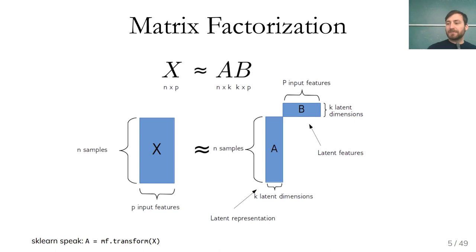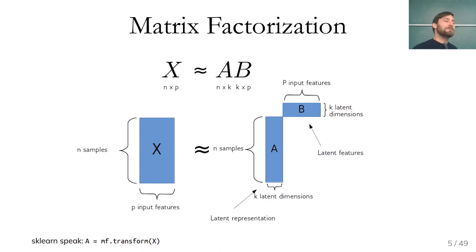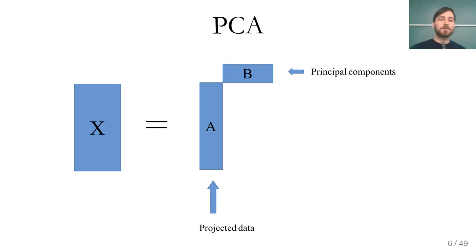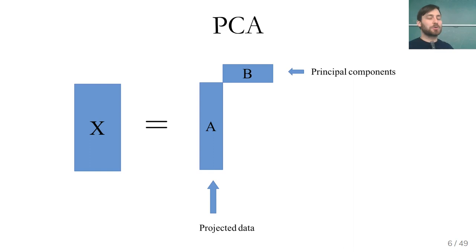In scikit-learn terms, you take X and transform it, and the transformation result is A. The way this is written down is you assume X can be expressed as A times B, where B are some model parameters you want to estimate and A is the latent representation. There are many models that fall into this category. One we've already seen is PCA, where we decompose X into some projected data A and the principal components B.